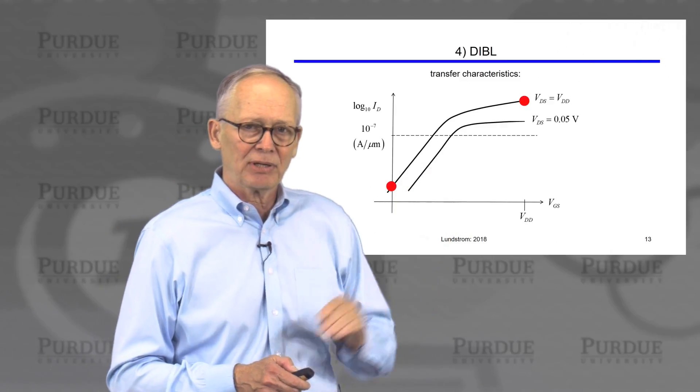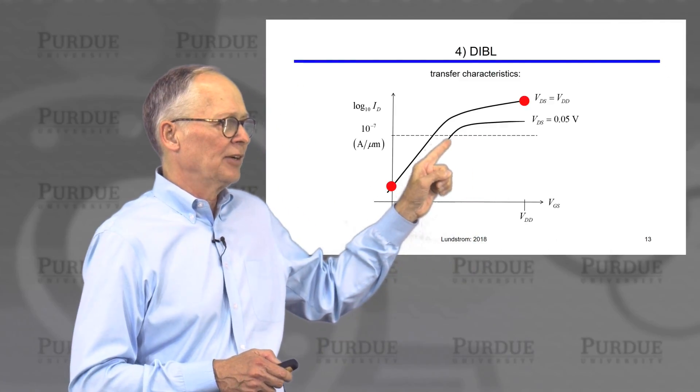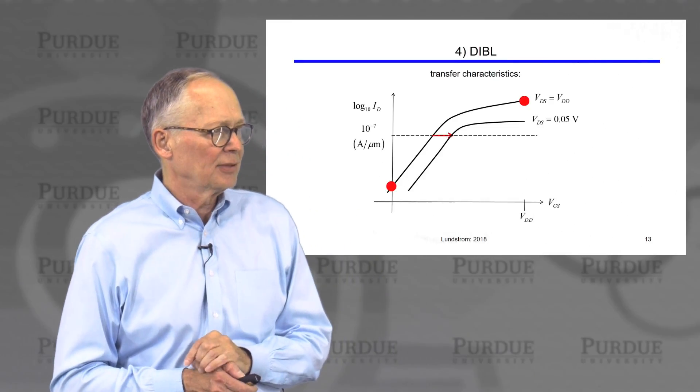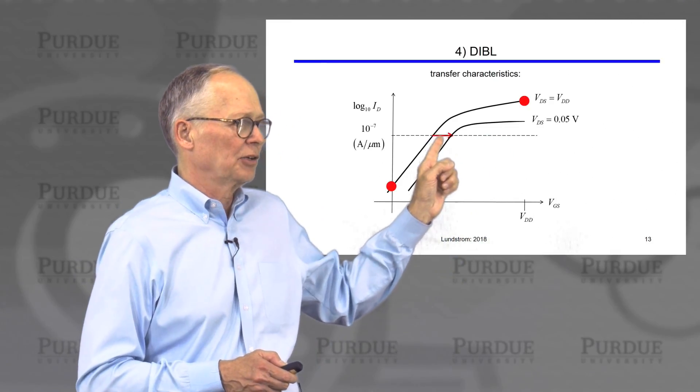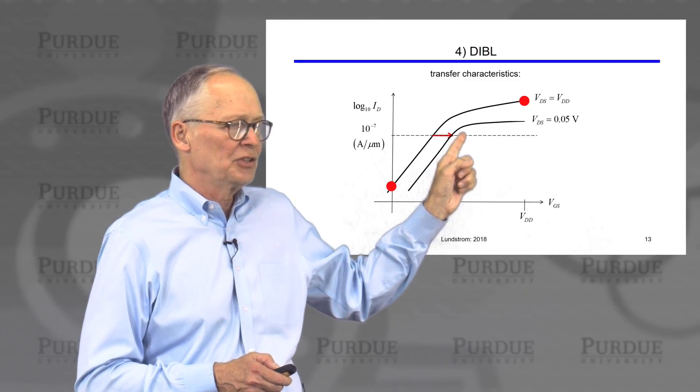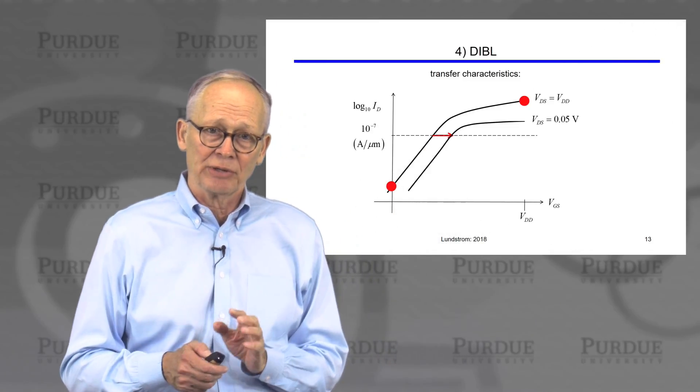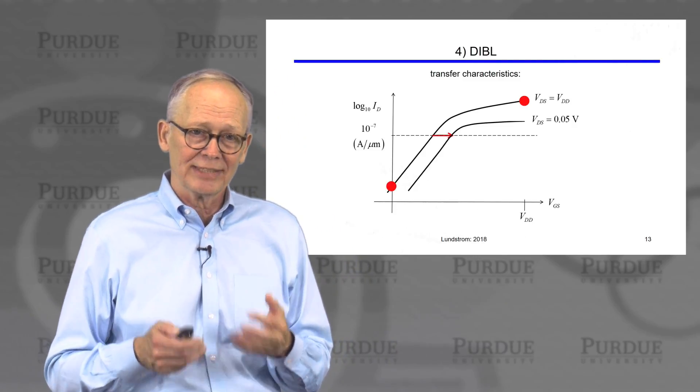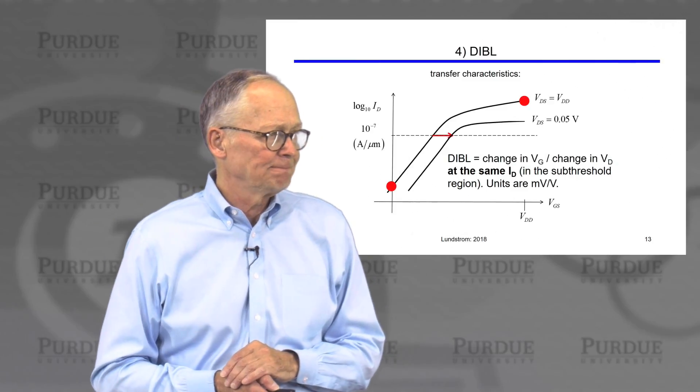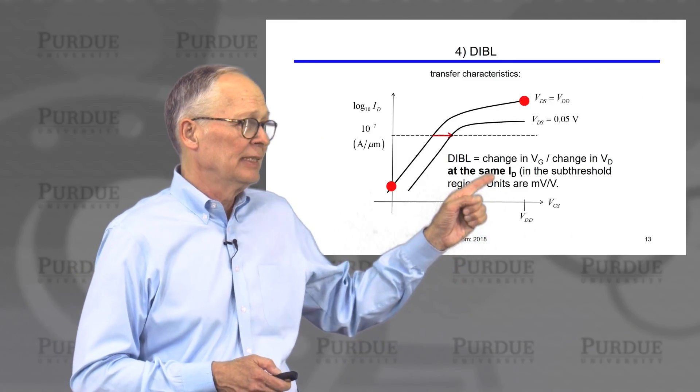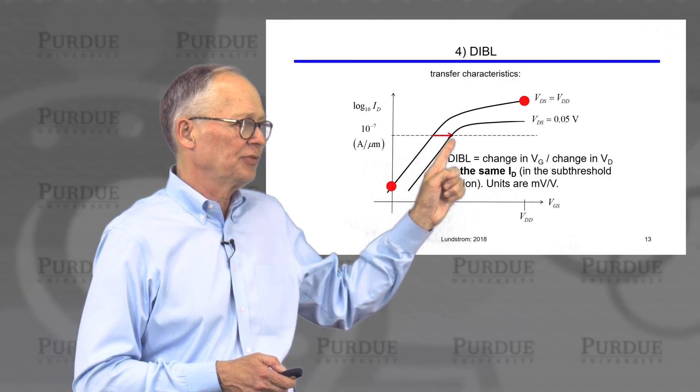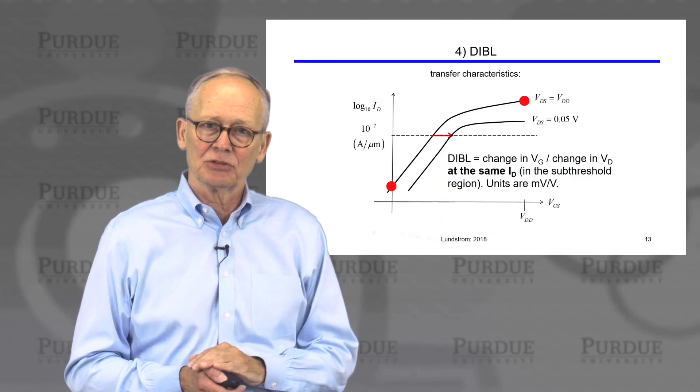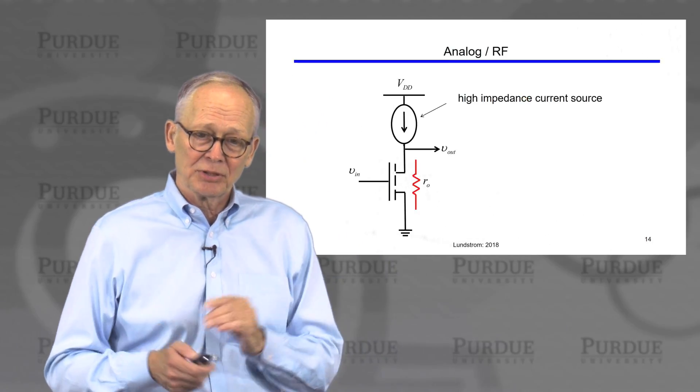We define an arbitrary current in the sub-threshold regime. And then we ask ourselves, how much is the characteristic under high drain voltage translated to the characteristic under low drain voltage. That translation is drain-induced barrier lowering called DIBL. And we usually measure that in millivolts per volt. So it's the number of millivolts shift in the gate voltage per volt change in the drain voltage in these two measurements. The lower the DIBL, the better.